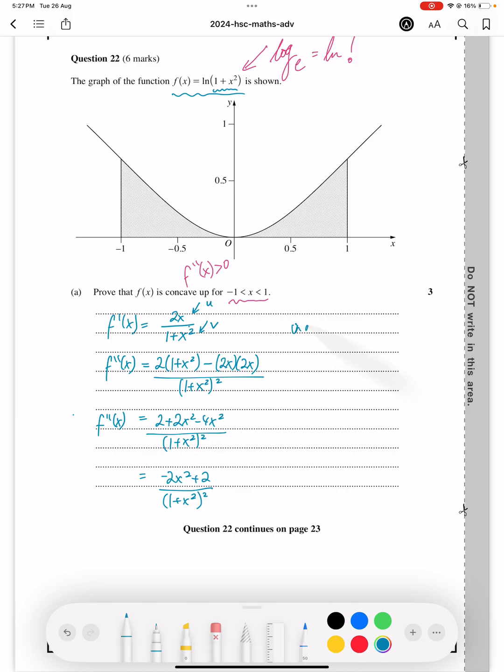Now, in order for f''(x) to be greater than 0, therefore the -2x² + 2 over (1 + x²)² has to be greater than 0, which means that the numerator itself has to be greater than 0. And so let's just focus on that for a second. If we move everything to the other side, that would mean that 0 is greater than 2x² - 2. That would mean that 2x² - 2 is actually less than 0.